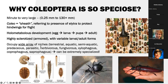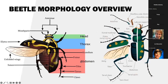Beetles occupy a very wide array of niches. They can be terrestrial, aquatic, semi-aquatic, predaceous, parasitic, herbivorous, fungivorous, xylophagous (which is feeding inside wood), coprophagous (which is dung), and then saprophagous (which is decaying animals). Bottom left, we have all these very weird types of larval stages. In the center, a specialized beetle that feeds on snails. Bottom right, we have the largest beetle on earth. And beetles have just been so successful as a grouping on this earth.